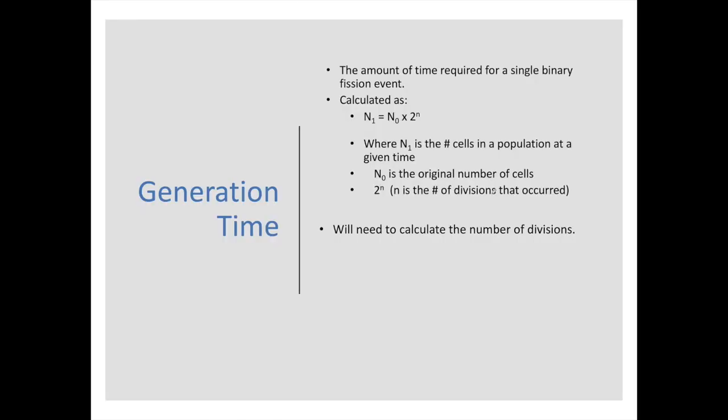What are we going to look at? We're going to look at generation time. Your textbook has this formula called n sub one equals n sub zero times two to the n. This is a pretty easy formula to use. n sub one is the number of cells in a population at a given time. n sub zero is the number of cells that we originally started with. Two to the n, where n is the number of divisions that occurred, or the number of generations.